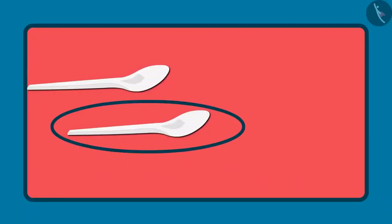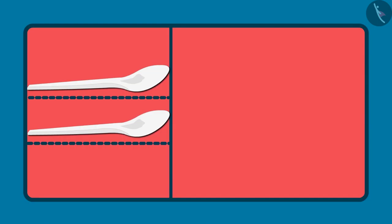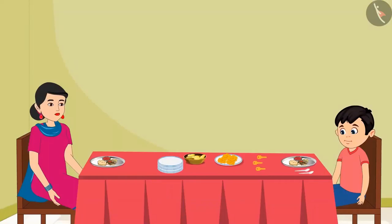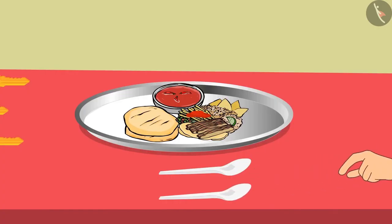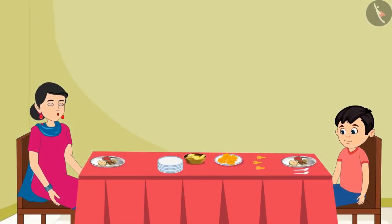Keep both the spoons together so that one end of both the spoons is together. Okay mummy, here you go. Now tell me, out of these two spoons, is either of them long or short, or both the spoons are of the same length? Tell me.